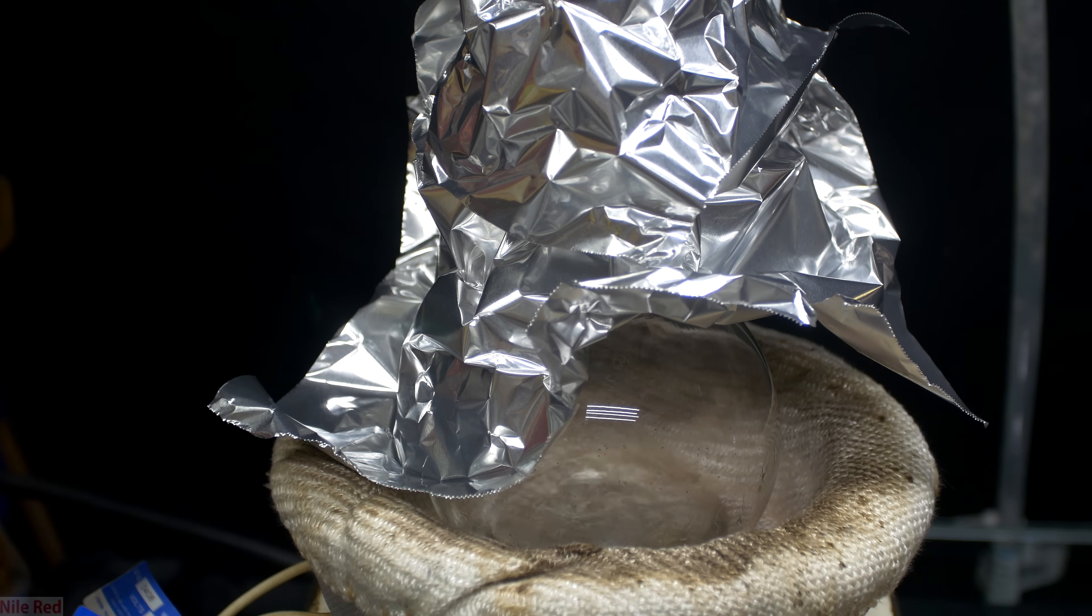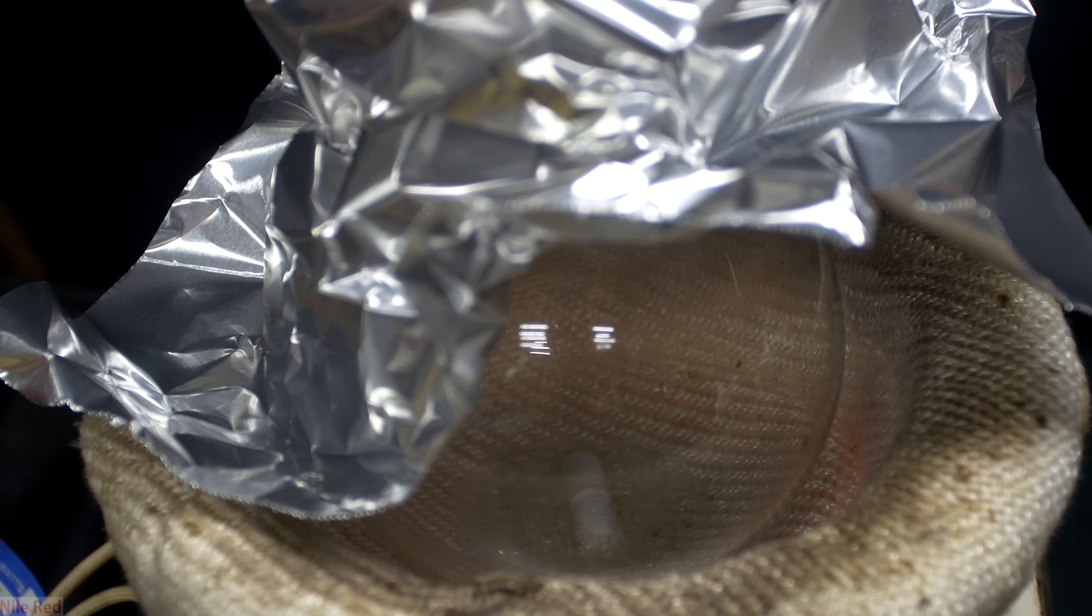As we continue with the distillation, the volume in the flask should slowly decrease. Once only a very small amount of distillate is left, I turn off the heating. In general, it's important not to heat to total dryness because this can lead to overheating of the flask.